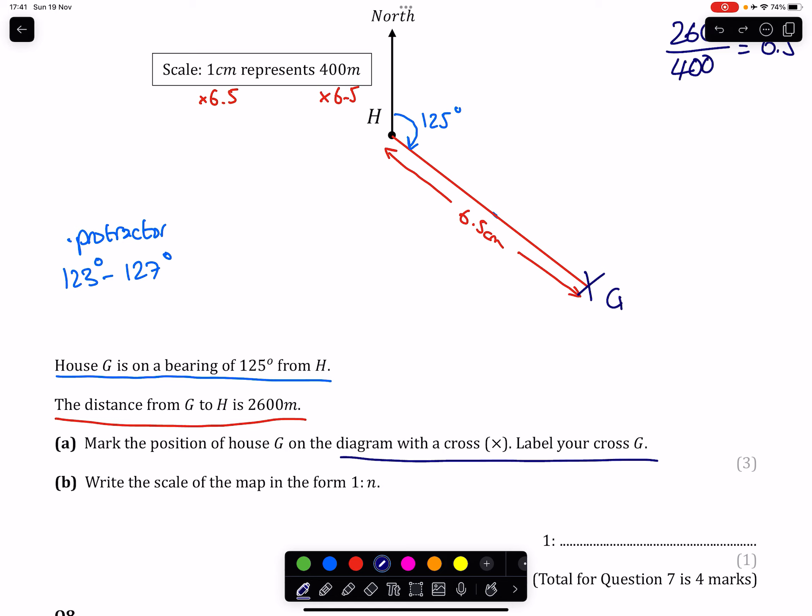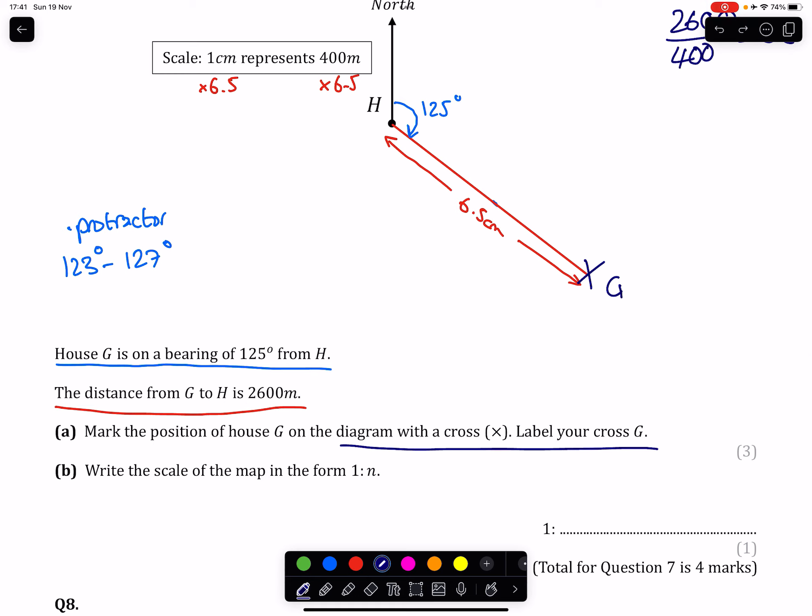So what we need to first of all do is convert that 400 metres into centimetres. By multiplying by 100, that gives us 40,000 centimetres. And then we have everything that we need in order to answer our question because we have our 1 already. There is the 40,000, and that's going to be the number that's on the other side of the ratio. Done.